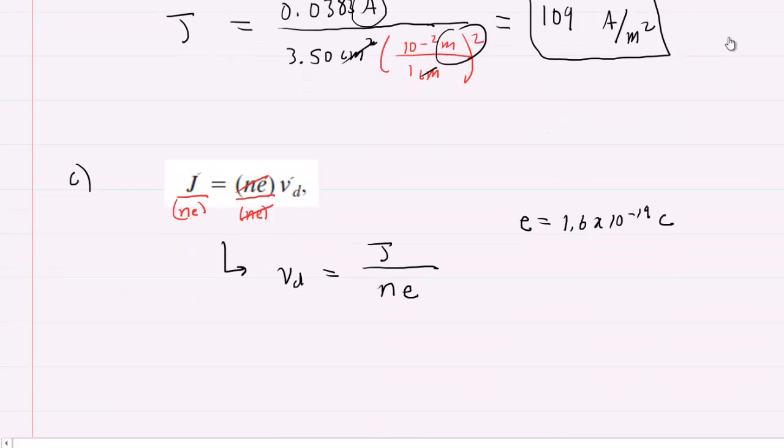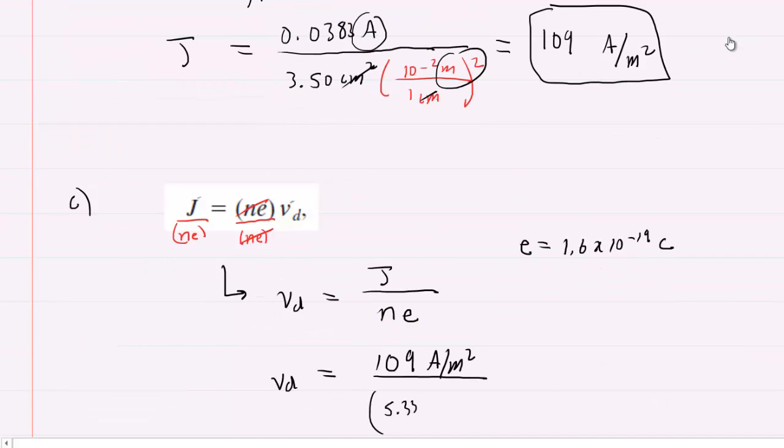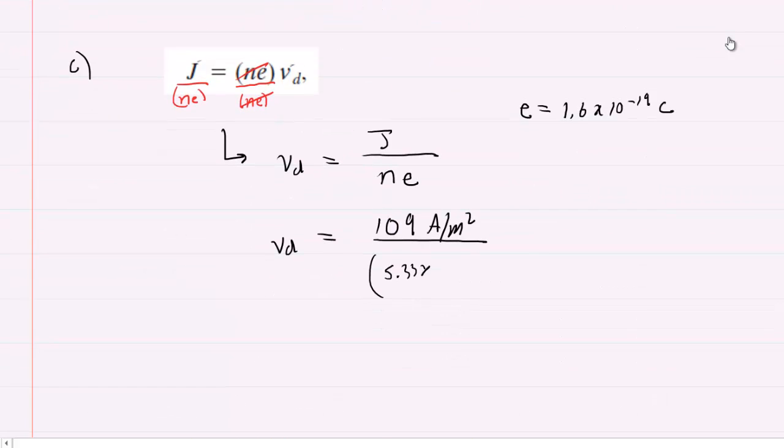We're going to substitute that value in for our N. In the numerator we'll take the current density of 109 amps per meter squared, divide this by that value N, which is 5.33.